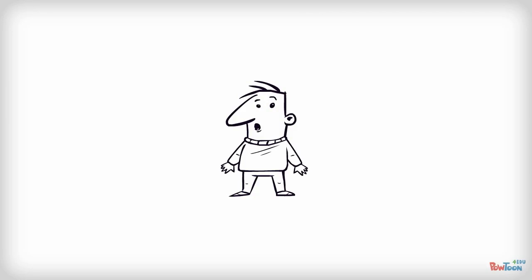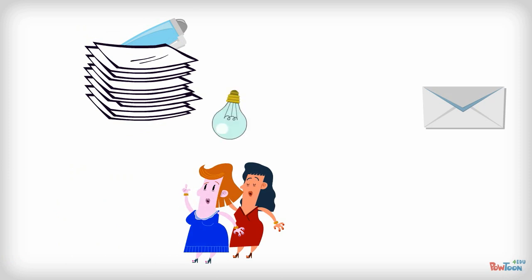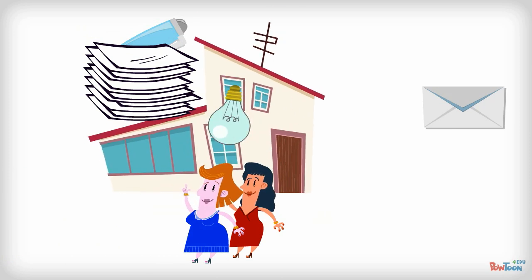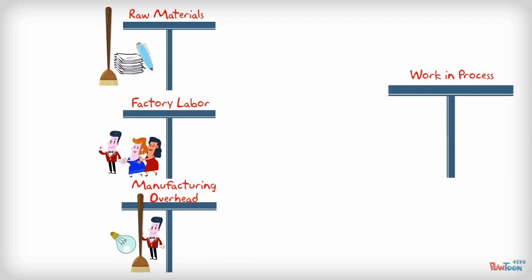Hello everyone, let's learn about job order costing. In the previous video we were producing an envelope. To produce the envelope we needed paper, glue, workers, electricity, and a factory. The account we concentrated on was work in process.